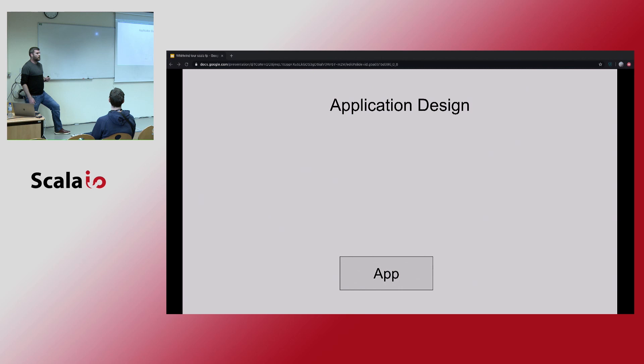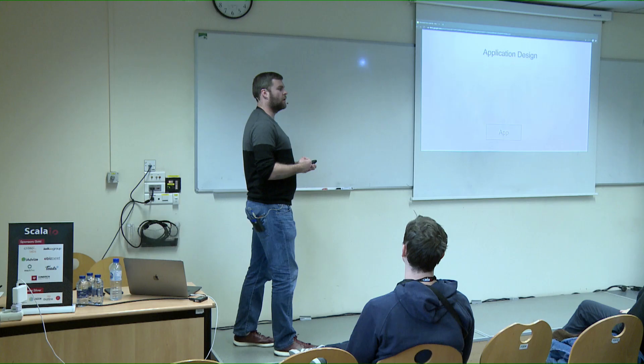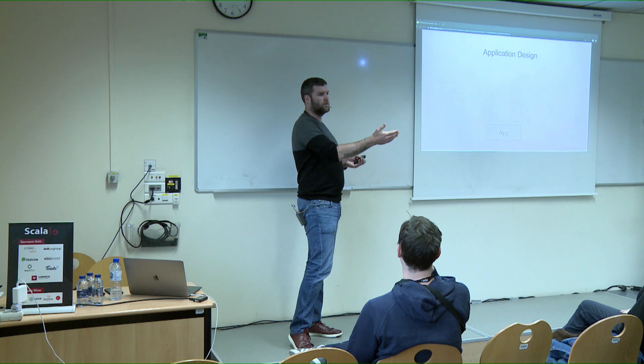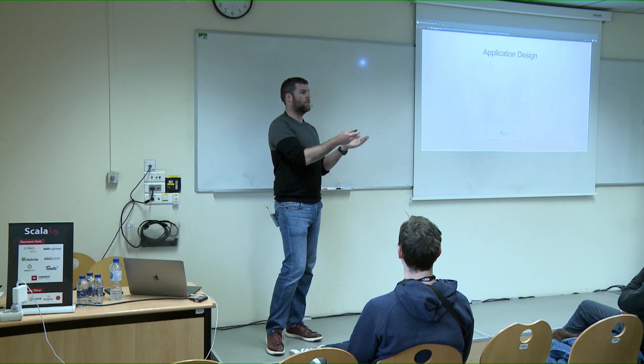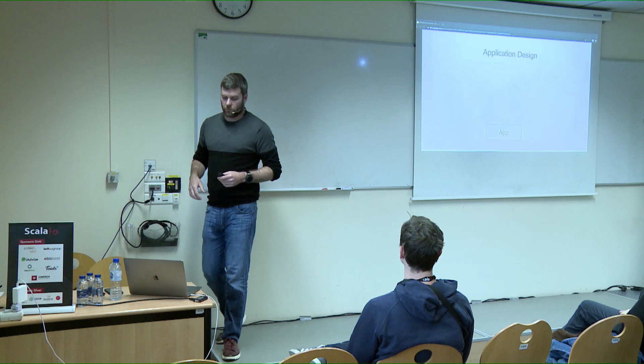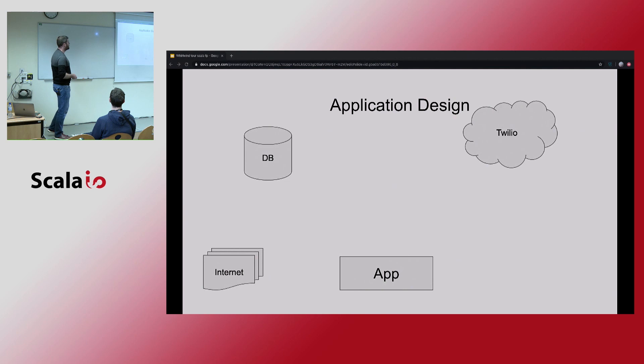Twilio has a concept where you buy phone numbers from them and use those phone numbers to do things. We don't want to buy a new phone number every time a new text message request comes in. So we want to buy a phone number, store it in the database, and use it for all the texts for the next month. That means our service needs to talk to three places: the internet to receive the HTTP request, the database, and Twilio.